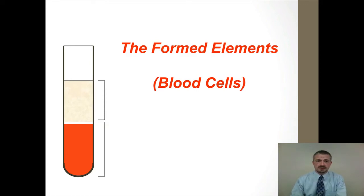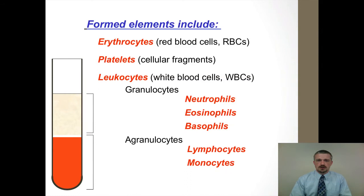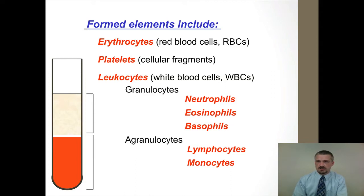Alright, so outside of the plasma, the other main blood component is going to be the formed elements, or a lot of times they call these the cellular components of the blood. When we look at the different types of formed elements, we're really going to see the erythrocytes, which are also known as red blood cells or RBCs. We have the platelets, sometimes also known as thrombocytes. And then finally we have the leukocytes, which are also known as the white blood cells or WBCs.